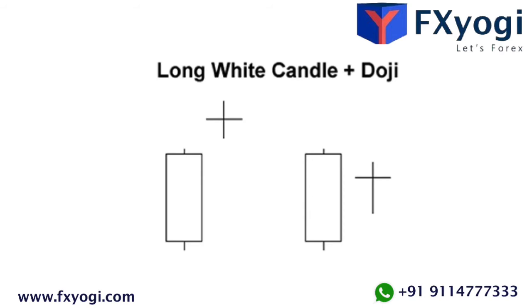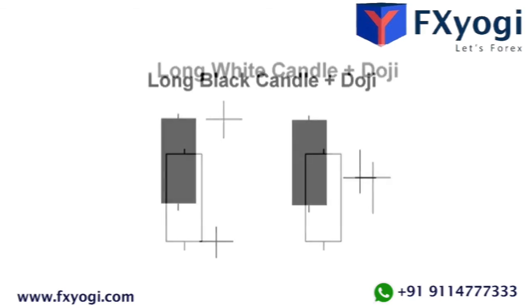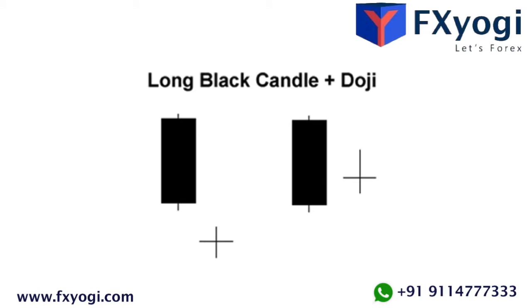The white marubozu: if a white marubozu forms at the end of an uptrend, a continuation is likely. If a white marubozu forms at the end of a downtrend, a reversal is likely. The black marubozu: if a black marubozu forms at the end of a downtrend, a continuation is likely. If a black marubozu forms at the end of an uptrend, a reversal is likely.